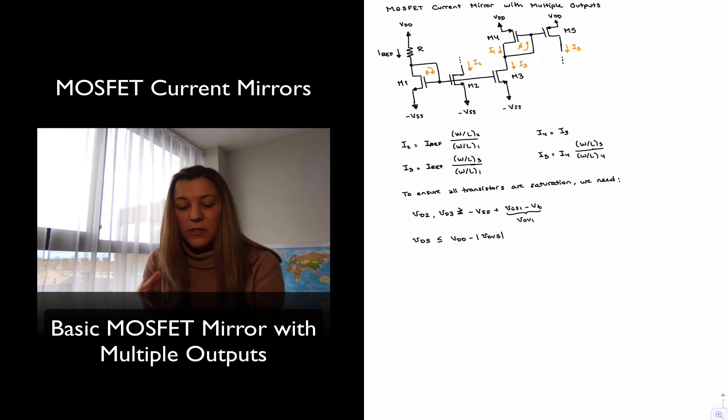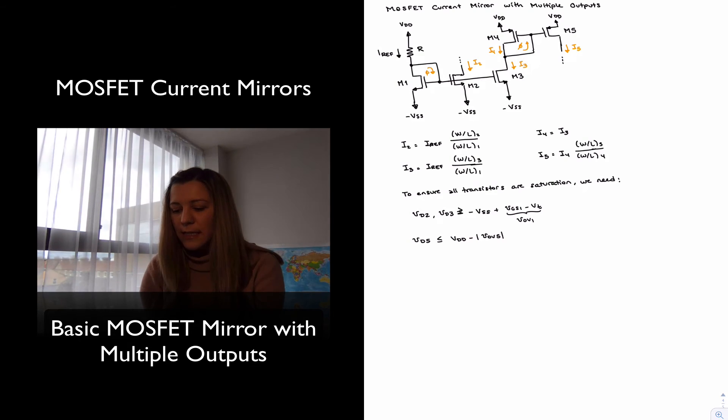Which should be the same as the one for transistor 4, since they are both connected to the same VGS. If they're all matched, they all have the same VT. So we will need those conditions to be met for the circuit to operate as intended.